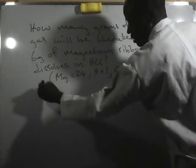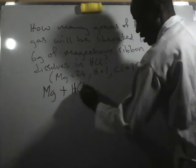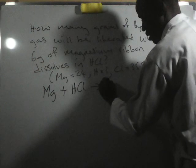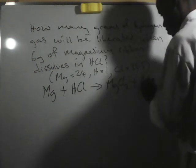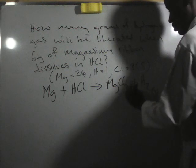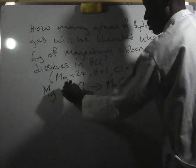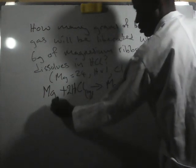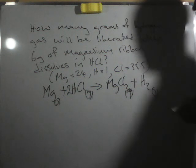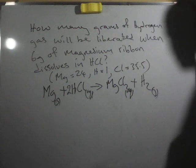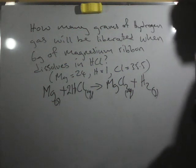The balanced chemical equation of the reaction will have magnesium plus 2HCl giving us MgCl₂ plus H₂ gas. This is solid, this is gas. This balanced equation.